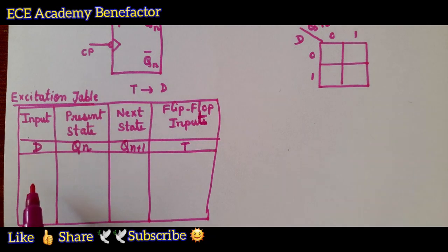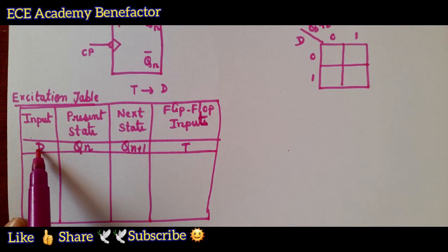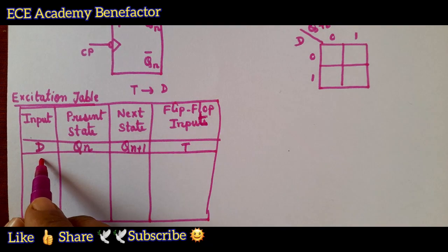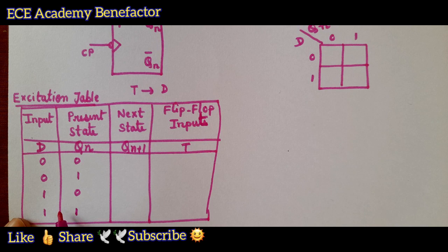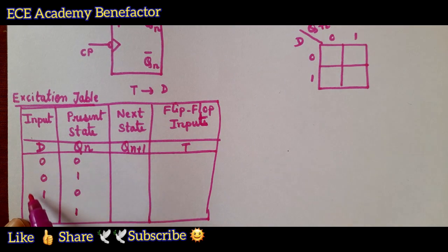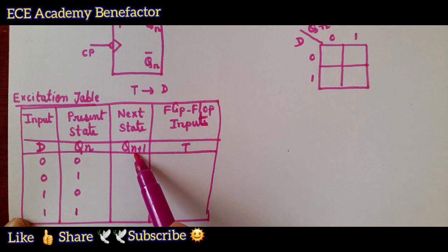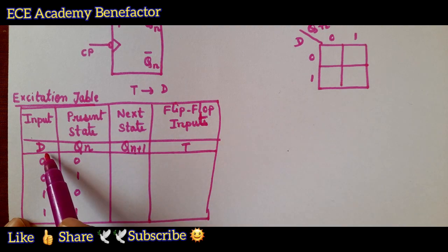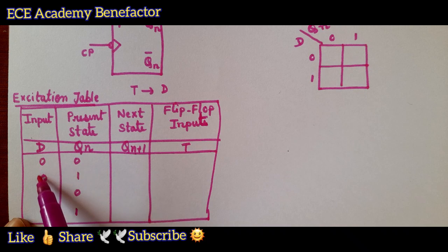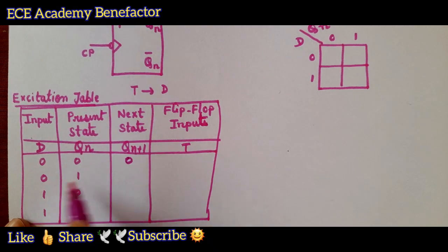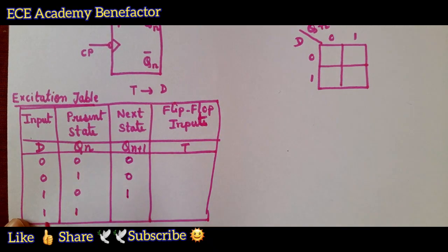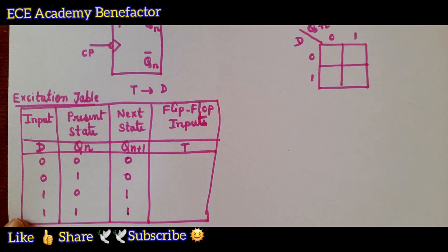To complete this table, let us write the binary combinations first for D and Q_n. With two variables there are four possible combinations: 0 0, 0 1, 1 0, 1 1. Now we write the truth table for the D flip-flop — it is easy because whatever is at D appears at Q_n+1. D stands for delay, so the output is the same as D: Q_n+1 = 0, 0, 1, 1. In this way we have completed Q_n+1.